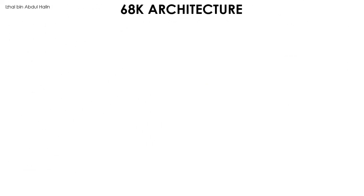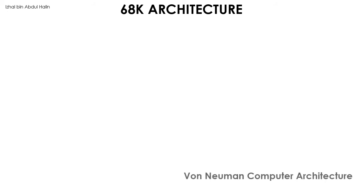The 68K microprocessor is a very complex system of integrated circuits fabricated on a chip. Similar to any complex system, it can be broken up into much more understandable circuit blocks. The architecture of the 68K microprocessor adopts the von Neumann computer architecture.